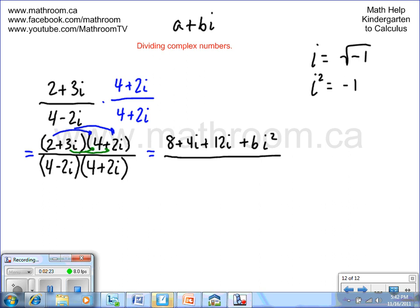Now we're going to solve the bottom. We're going to do the same thing. We're going to distribute the 4 with the 4 and the plus 2i, and distribute the minus 2i with the 4 and with the 2i. 4 times 4 is 16. 4 times plus 2i is plus 8i. Minus 2i times 4 is minus 8i. Minus 2i times plus 2i is minus 4i squared.